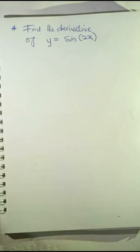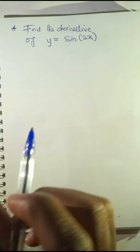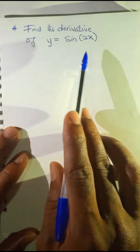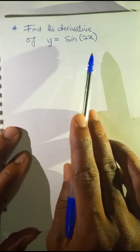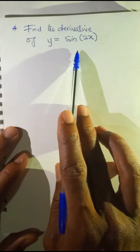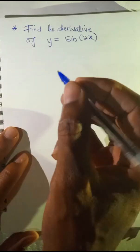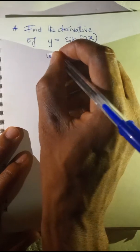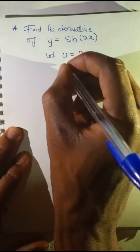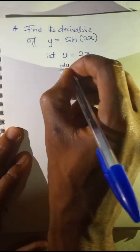We are looking at how to find the derivative of trigonometric functions. The question says: find the derivative of y equals sine 2x. In this case, you are going to treat this function as a function of a function. Let u equal 2x — the function under the bracket — then differentiate u with respect to x.